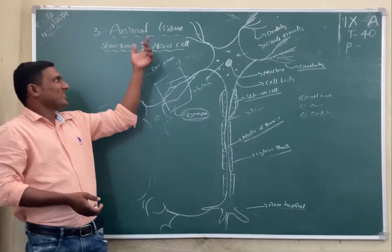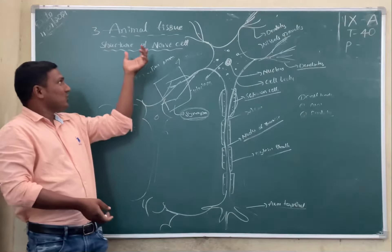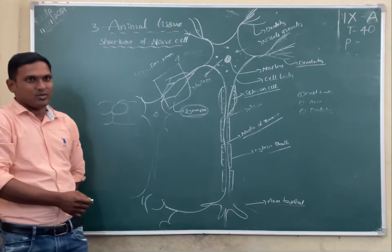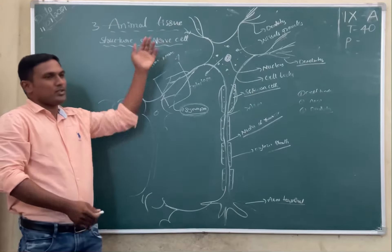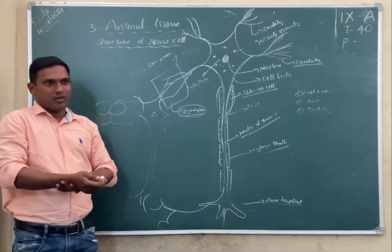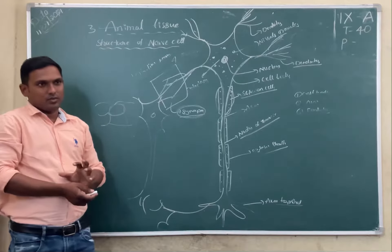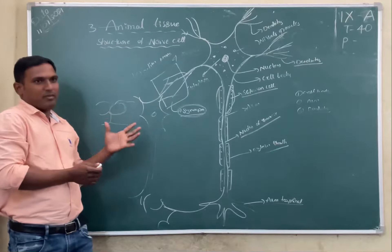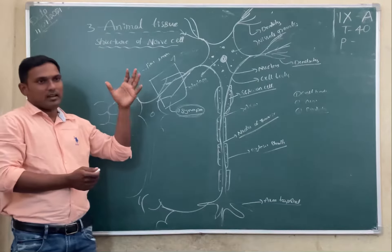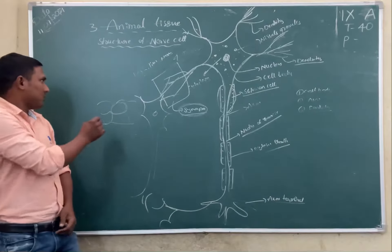Hello everybody, today we are going to discuss about animal tissue. Animal tissue means a group of cells performing similar structure and similar function is called a tissue. We are going to discuss how they perform their functions, and based on that they are classified into four types of tissues.